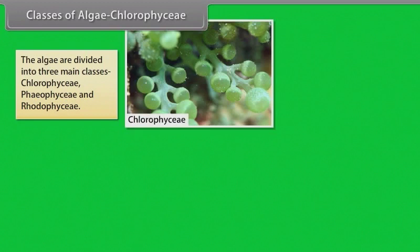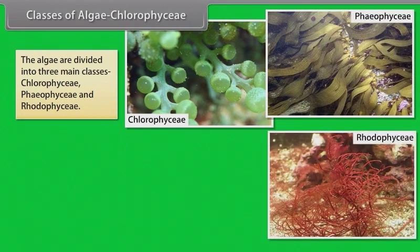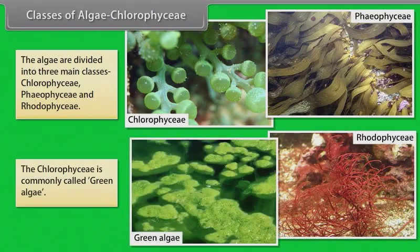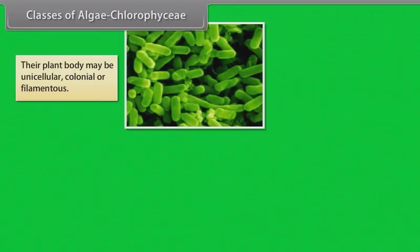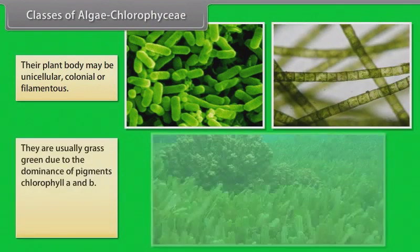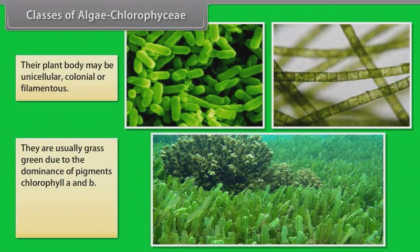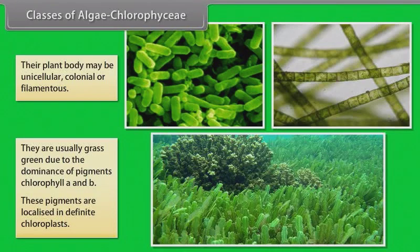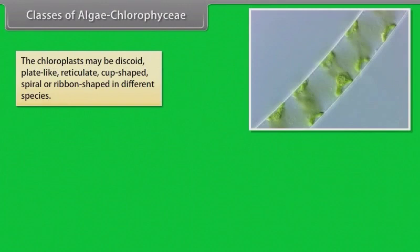The algae are divided into three main classes: Chlorophyceae, Phaeophyceae, Rhodophyceae. The Chlorophyceae is commonly called green algae. Their plant body may be unicellular, colonial or filamentous. They are usually grass green due to the dominance of pigments chlorophyll A and B. These pigments are localized in definite chloroplasts. The chloroplasts may be discoid, plate-like, reticulate, cup-shaped, spiral or ribbon-shaped in different species.